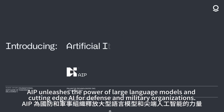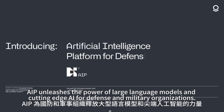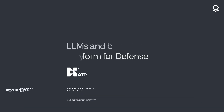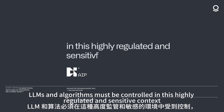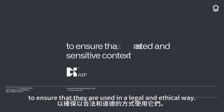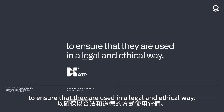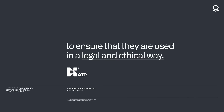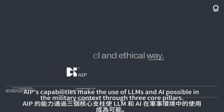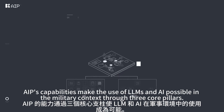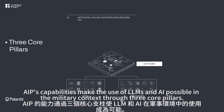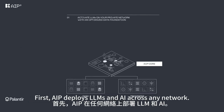AIP unleashes the power of large language models and cutting-edge AI for defense and military organizations. LLMs and algorithms must be controlled in this highly regulated and sensitive context to ensure that they are used in a legal and ethical way. AIP's capabilities make the use of LLMs and AI possible in the military context through three core pillars.